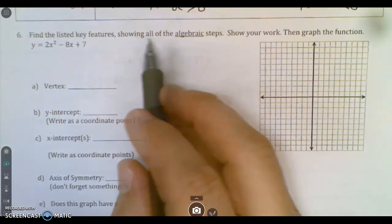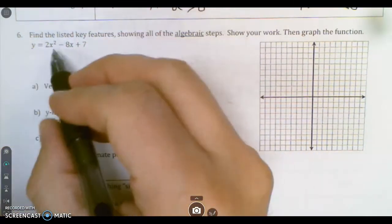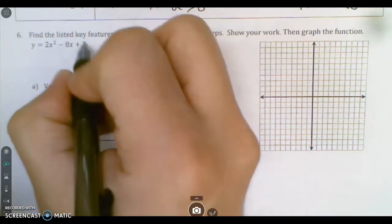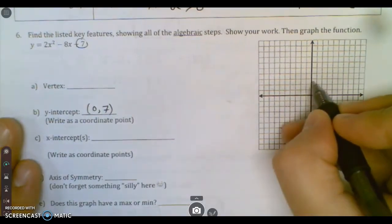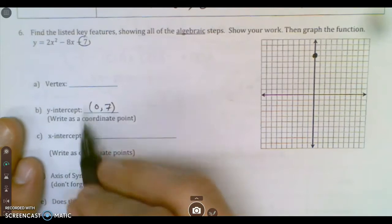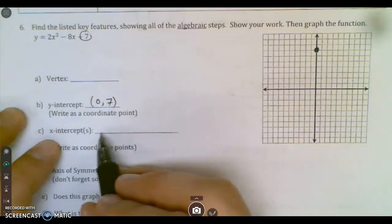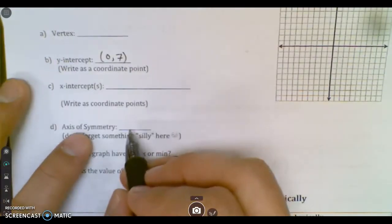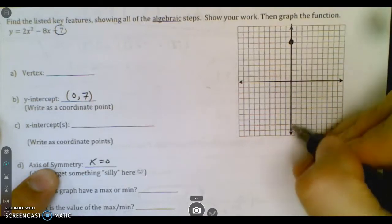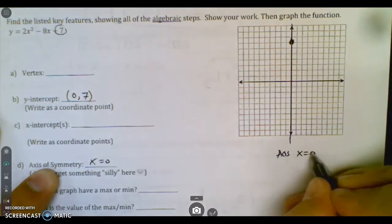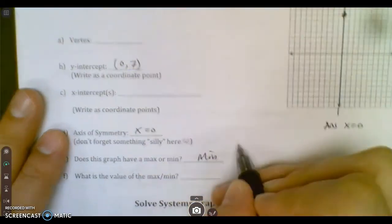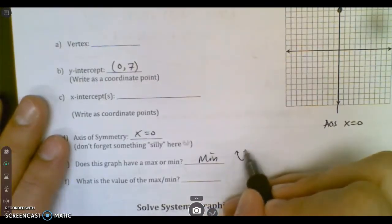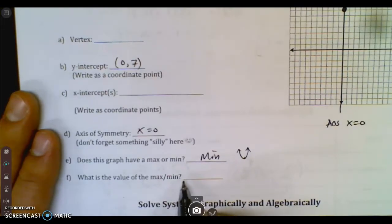Now we're going to find all the features using algebra. So we're not using our graphing calculator. The vertex, I can't see it right away, but I can see the y intercept. The y intercept is 7. Now it does say write as a coordinate. So I know to write 0, 7. We'll come back to vertex. X intercepts, we'll probably do quadratic formula for that. Axis of symmetry is an easy one because I just steal the x. Does the graph have a max or a min? I already know it's going to be a min. You know why? Because A is positive. So it opens up, which means that's a min.